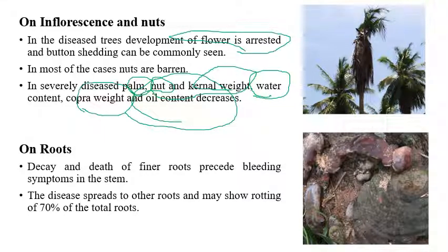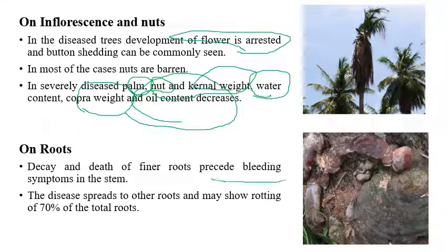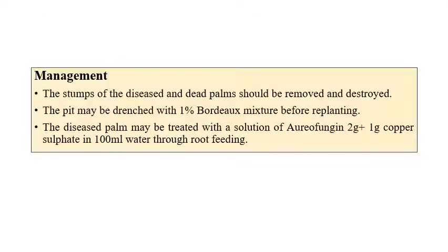In severe cases, oil content, copra weight, and water content inside the nuts are all drastically reduced. Regarding roots, decaying of roots is very common; decaying and death of finger roots proceed to stem bleeding. The disease can spread through roots since coconut has a very strong root system with roots that can spread widely — approximately 70 percent of spread may occur through roots.